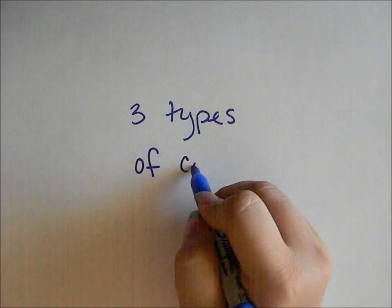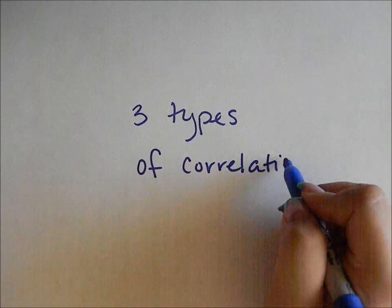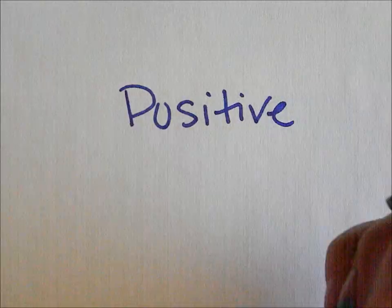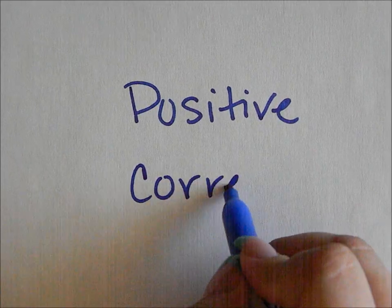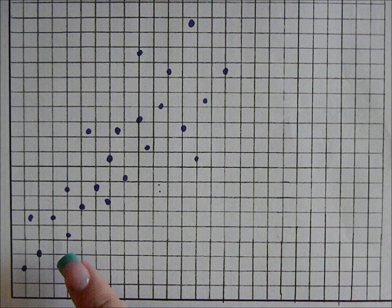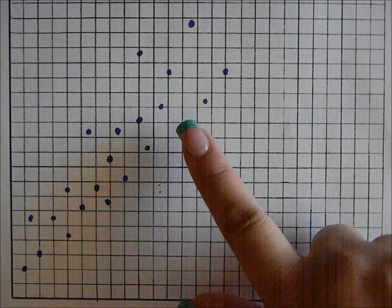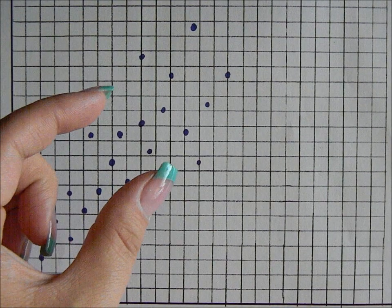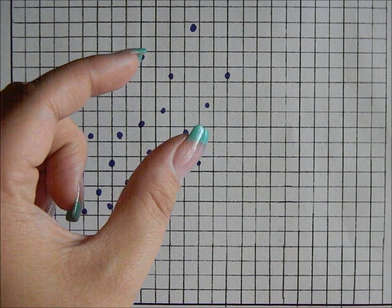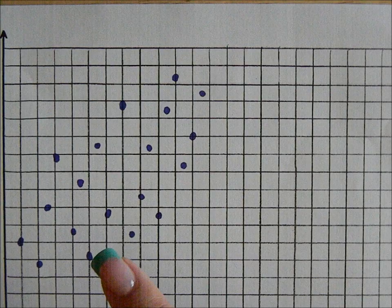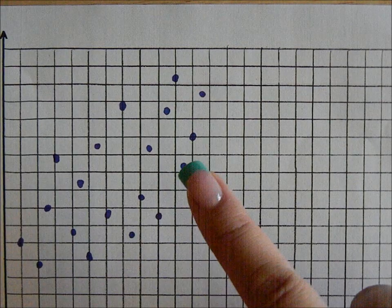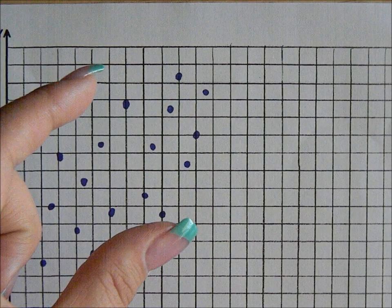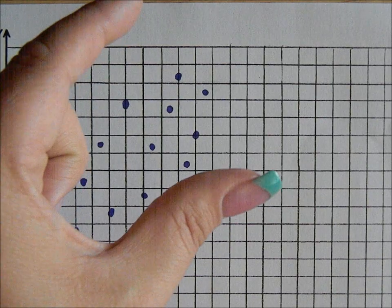There are three types of correlation. Positive correlation is when the points are forming an increasing tight pattern or a positive slope. The points can either form a tight formation or a wide formation. As long as the points are showing an increasing pattern or a positive slope, the data will have a positive correlation.